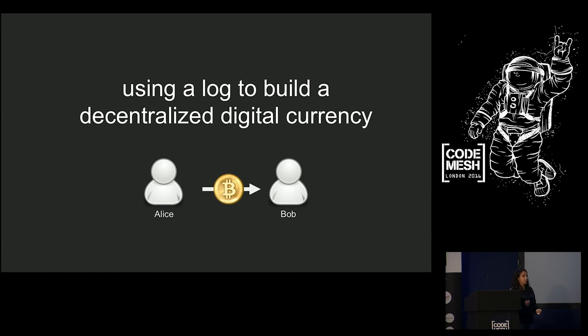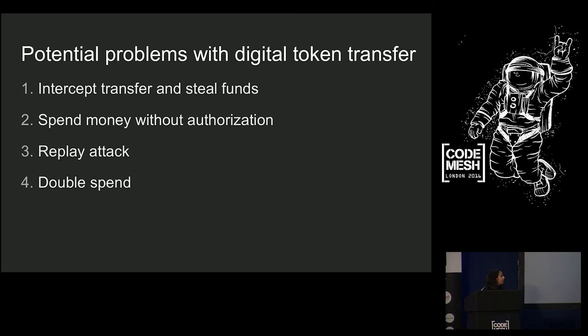It's Visa that controls my credit card and is deducting and adding things to my account. It's my bank that controls my bank transfers. So we're talking about digital tokens, digital money that isn't controlled by an institution here. And the way that we're going to represent that are by unique tokens. So Alice wants to pay Bob. Well, Alice is going to give Bob a unique token, and that unique token is going to represent one coin. So there are a few potential problems with digital token transfer.